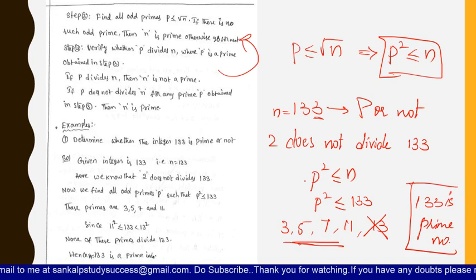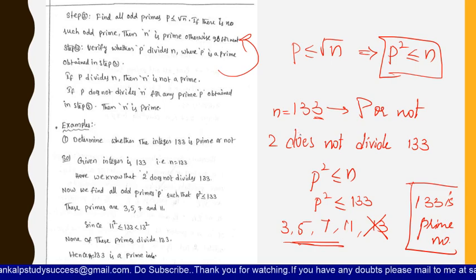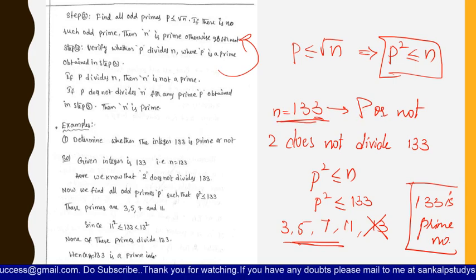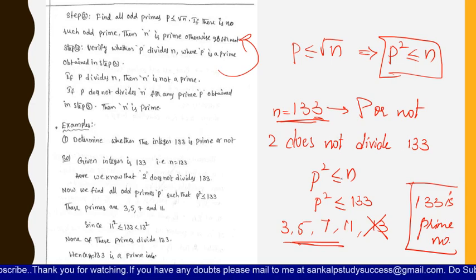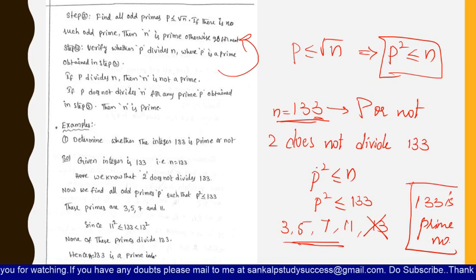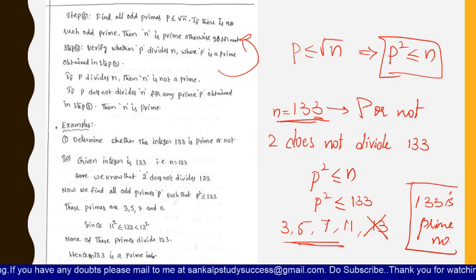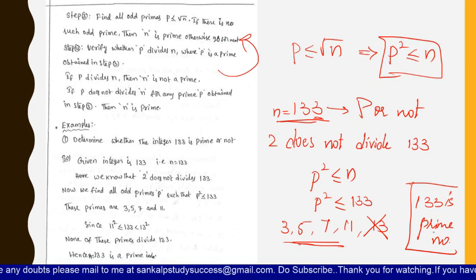Let us recap. We checked whether 133 is prime. First step: 2 does not divide 133. Second step: we found all odd primes p where p squared is less than or equal to 133 — those are 3, 5, 7, and 11. None of these odd primes divide 133, so we conclude that 133 is a prime number.